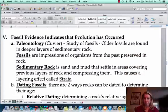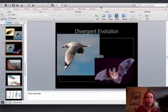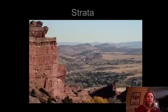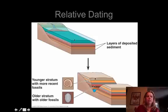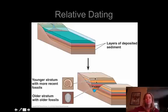Let's talk about how scientists know evolution has occurred. Back in the day, they used fossil evidence. Paleontology is the study of fossils — impressions or remnants of organisms from the past preserved in rock, specifically sedimentary rock like sandstone. Sedimentary rock is composed of layers. If you found a fossil in a lower layer and another in an upper layer, you could assume the lower one is older, since the top layer was deposited most recently. This is called relative dating.